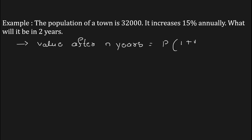From the given formula, the value of P is equal to the given population, that is 32,000.